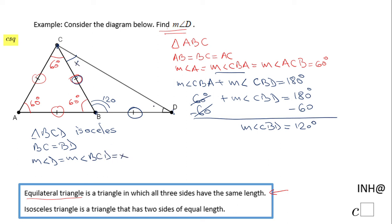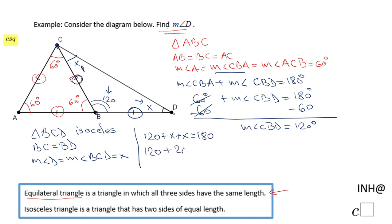Now I'll use the fact that the sum of the interior angles of a triangle is 180 degrees. So we have: 120 plus X plus X equals 180. That gives us an equation I can solve — I combine the X terms first, then subtract 120.